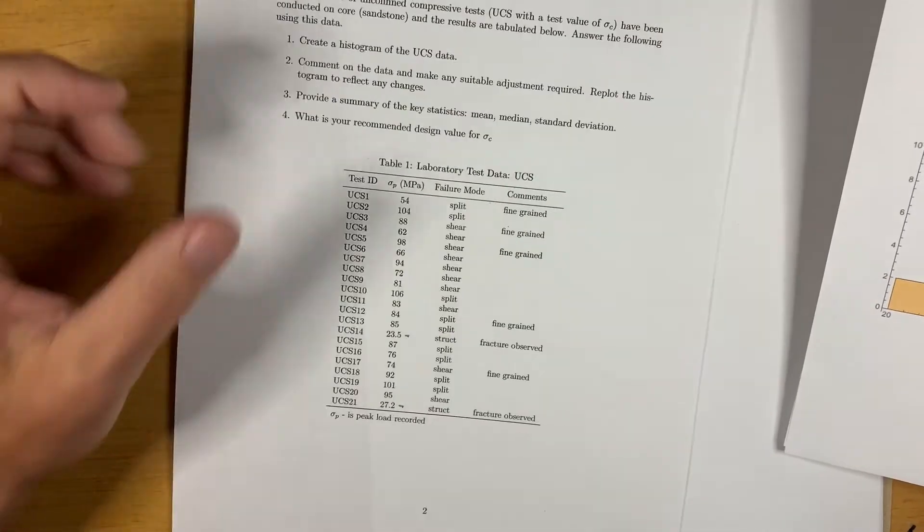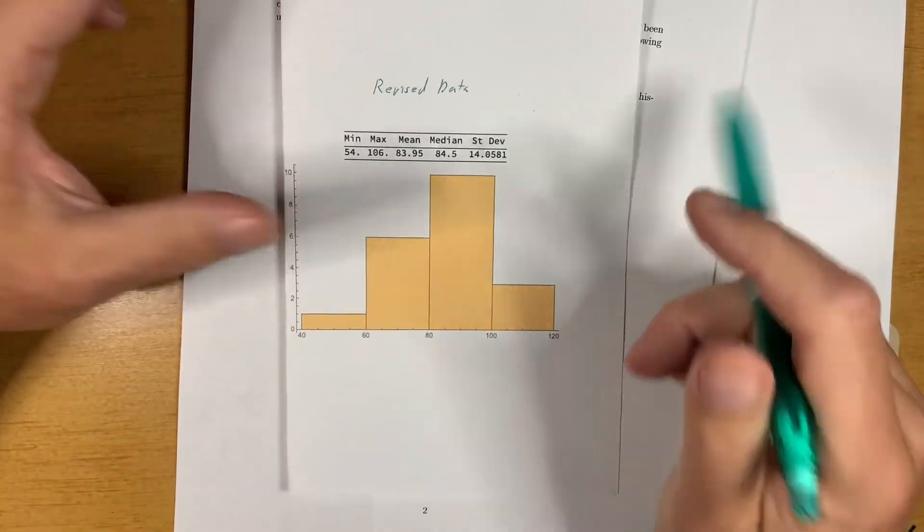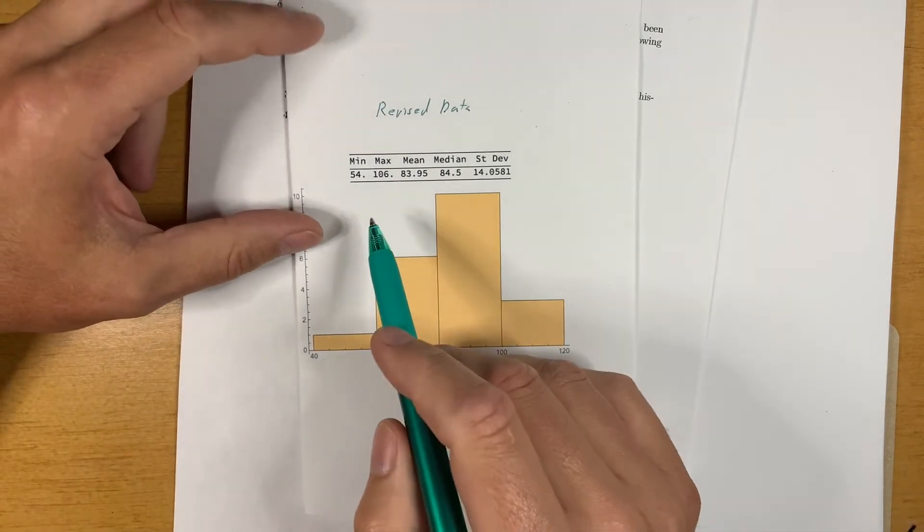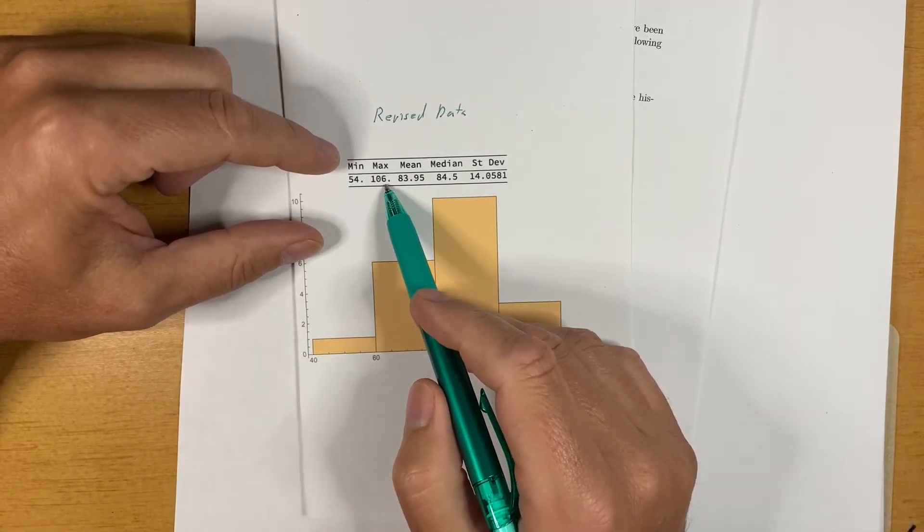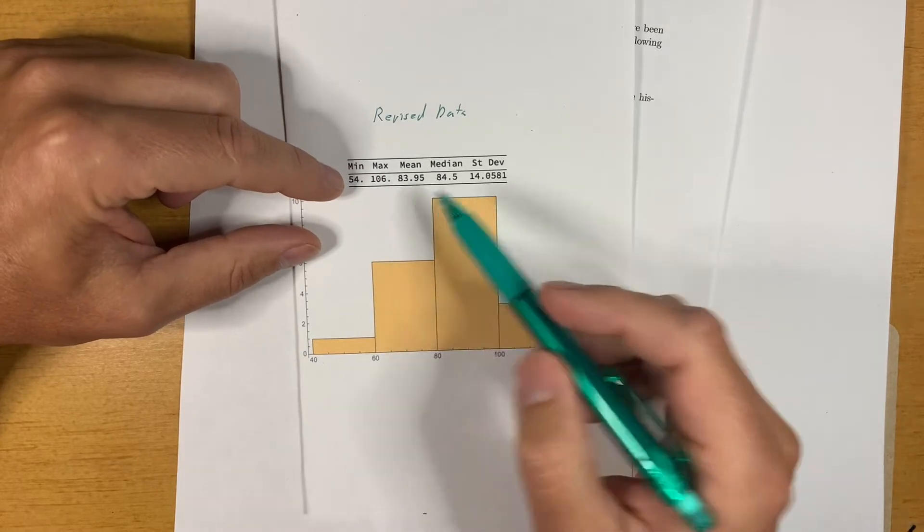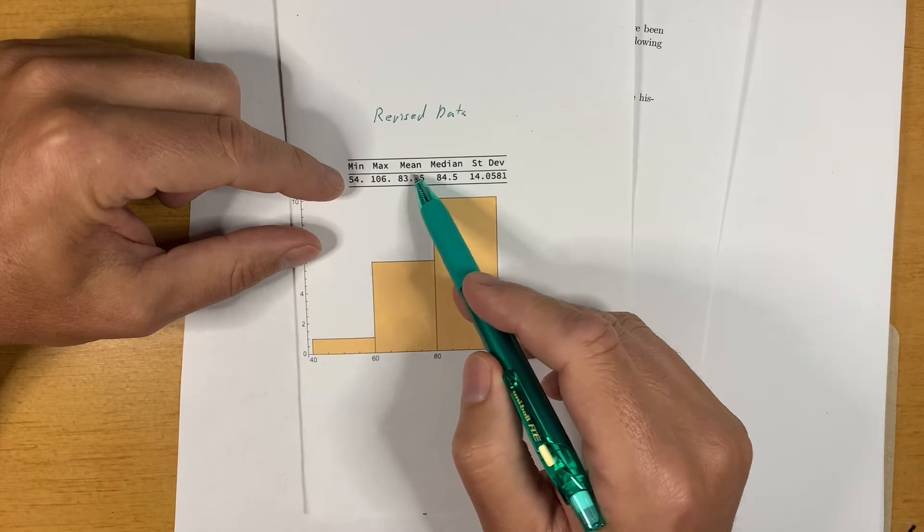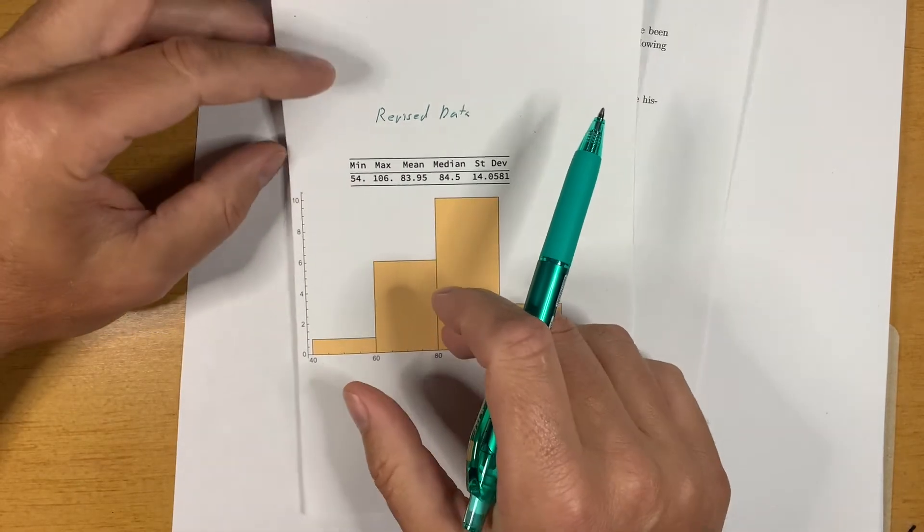So I did that. I removed those two points and I recalculated the statistics. And you can see now I got some new values here. I got 54 as a minimum, 106 as a maximum. We have still the mean is now 84, which is about 5% higher than it was.